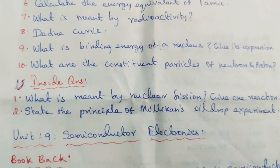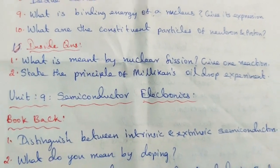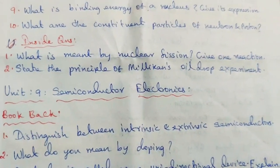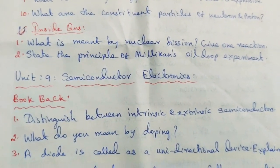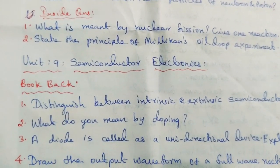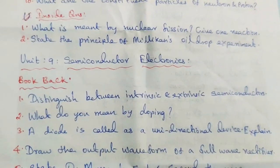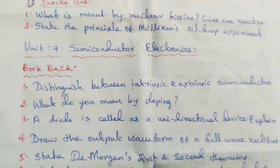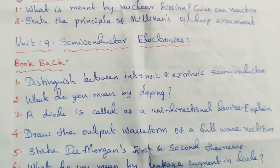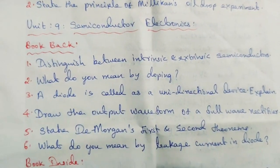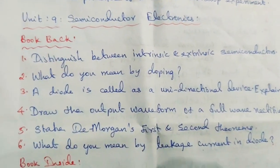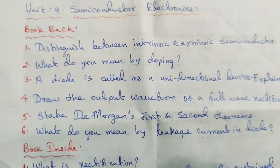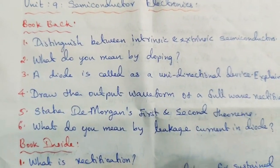Unit 9: Semiconductor Electronics. Book back questions: Distinguish between intrinsic and extrinsic semiconductors. What do you mean by doping? A diode is called a unidirectional device — explain. Draw the output waveform of a full-wave rectifier. State De Morgan's first and second theorems. What do you mean by leakage current in a diode?